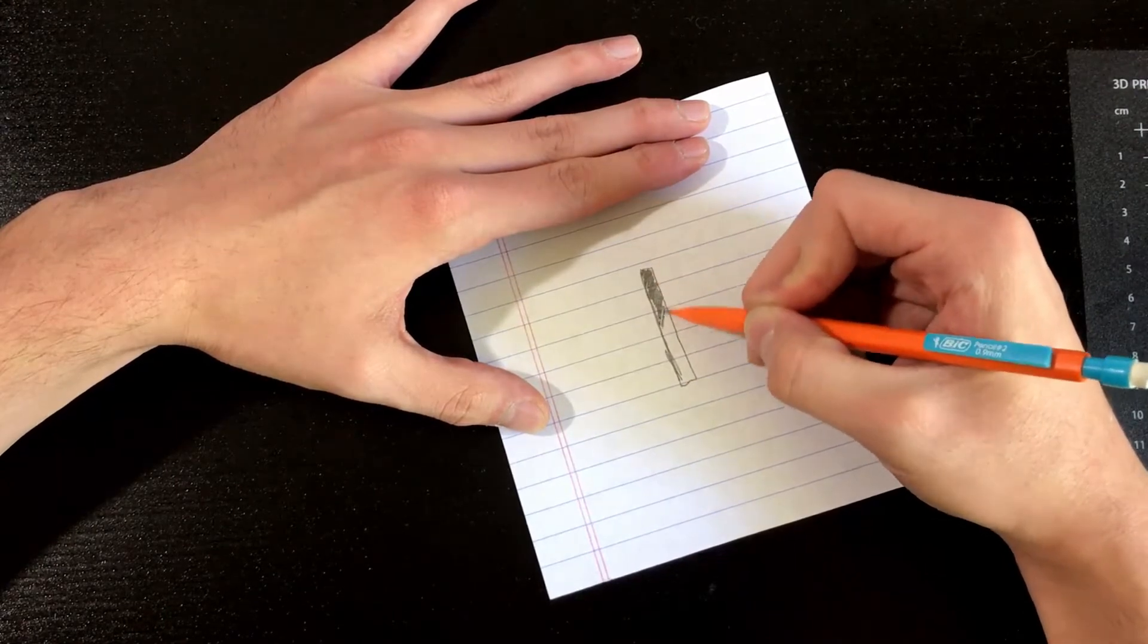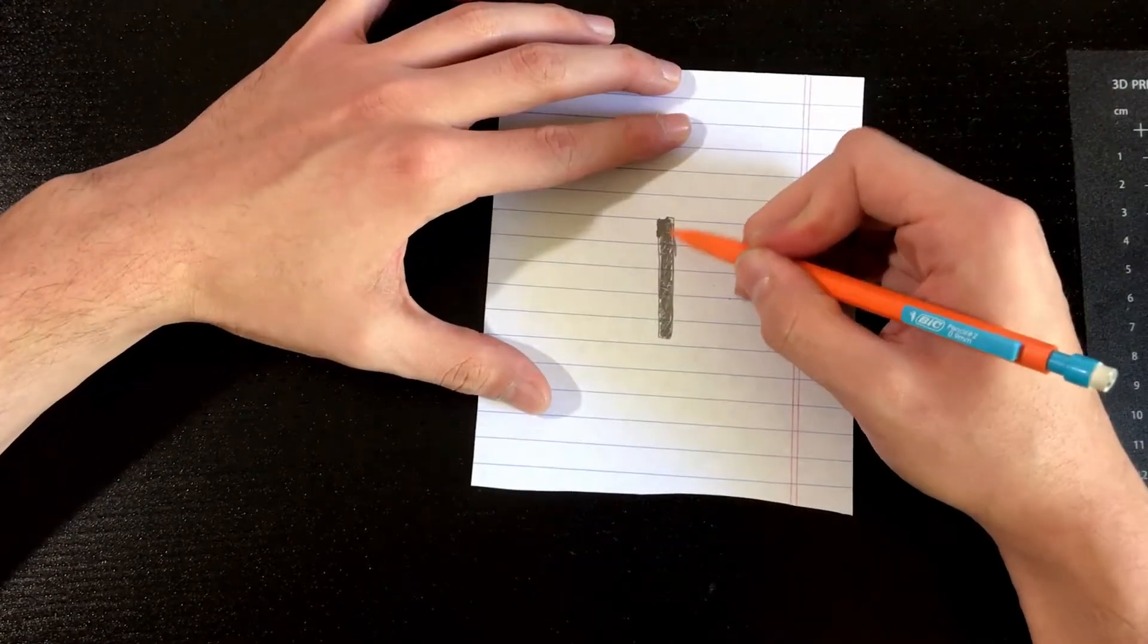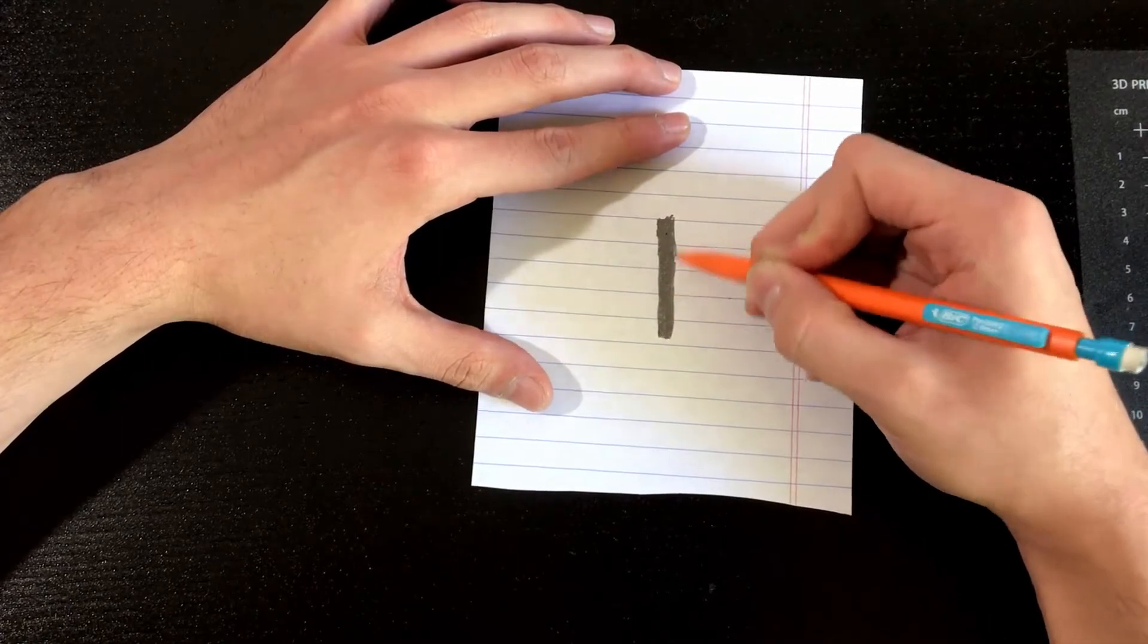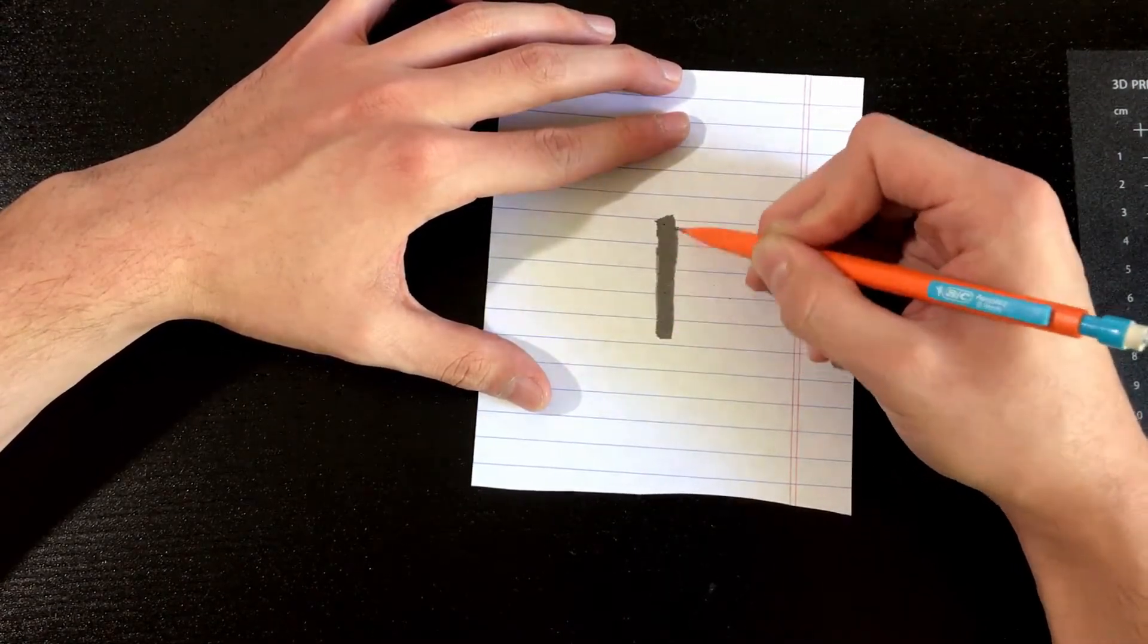Now it's not the 1700s, so our pencils are no longer made out of pure graphite, but there's still a good amount in there. We just want to make sure that the mix we have is conductive enough.